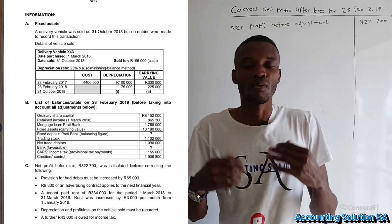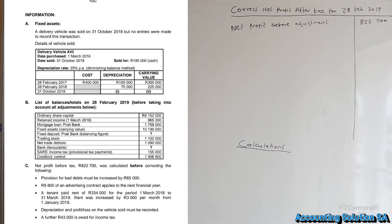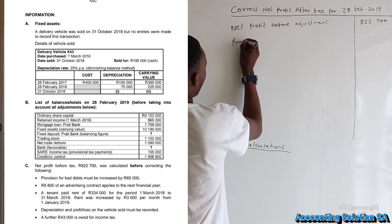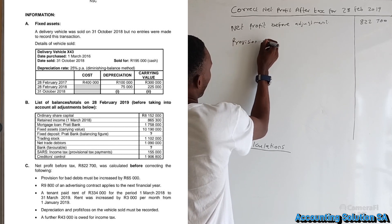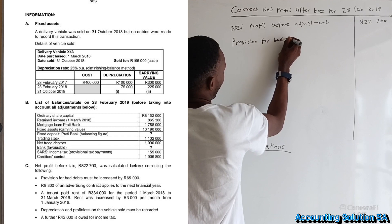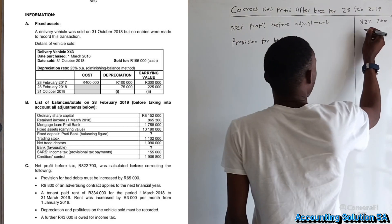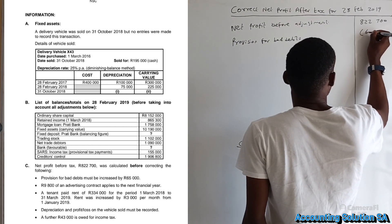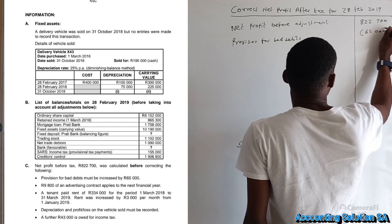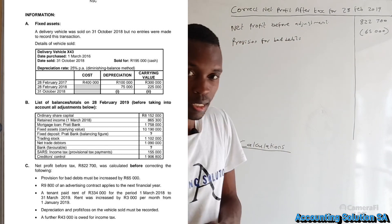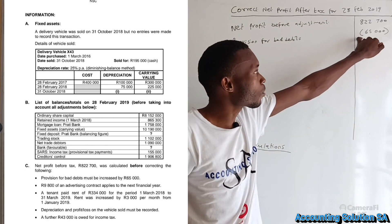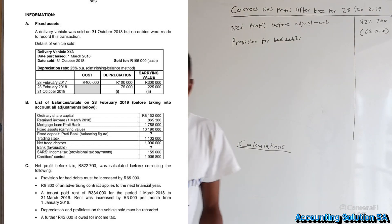Because in this scenario provision for bad debts has increased by 65,000, we record it as an expense — it's a minus, shown with brackets. On the income statement, it can appear under expenses or income depending on the direction, but here it's an expense.